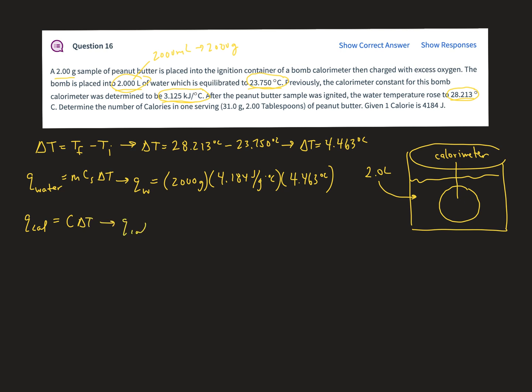So the Q for the calorimeter, I don't need the mass, because I just have the heat capacity for that calorimeter. So 3.125 kilojoules per degree Celsius, and the calorimeter goes through a 4.463 degree temperature change. So now I want to multiply those together to get the Q for the calorimeter and the Q for the water.